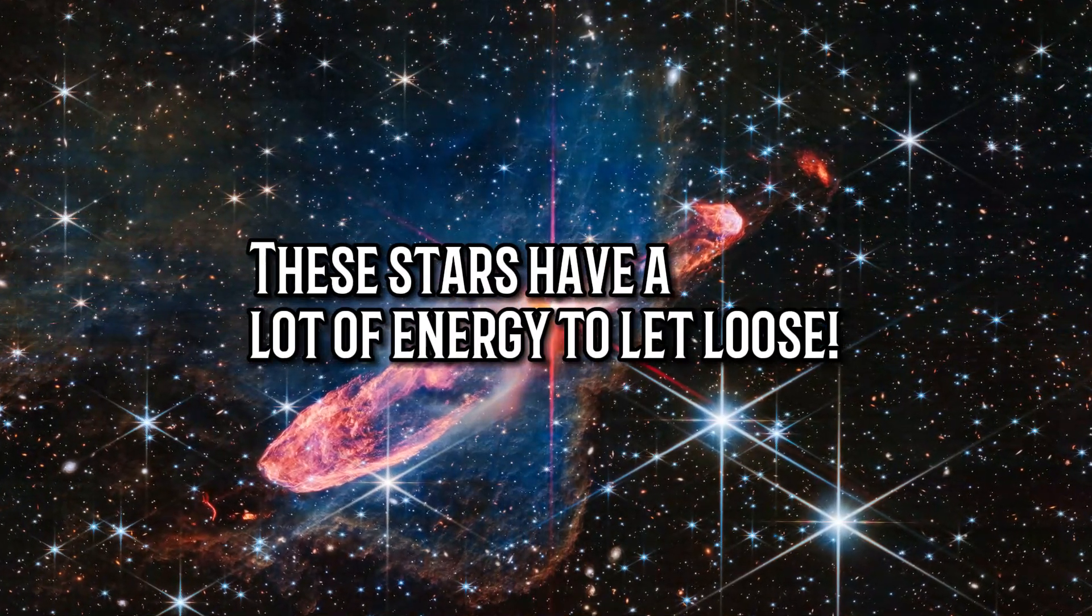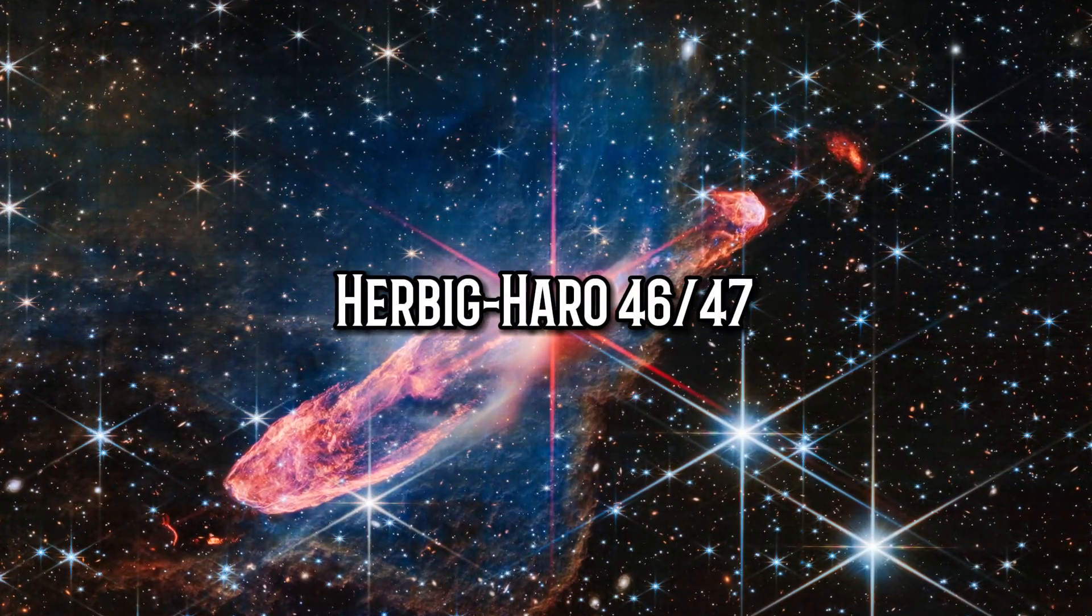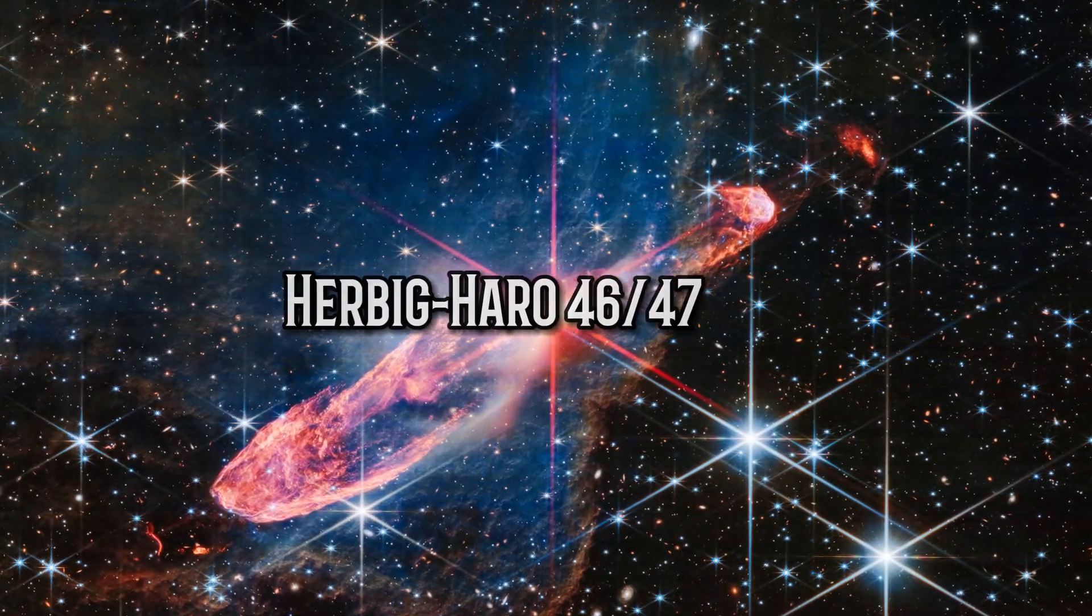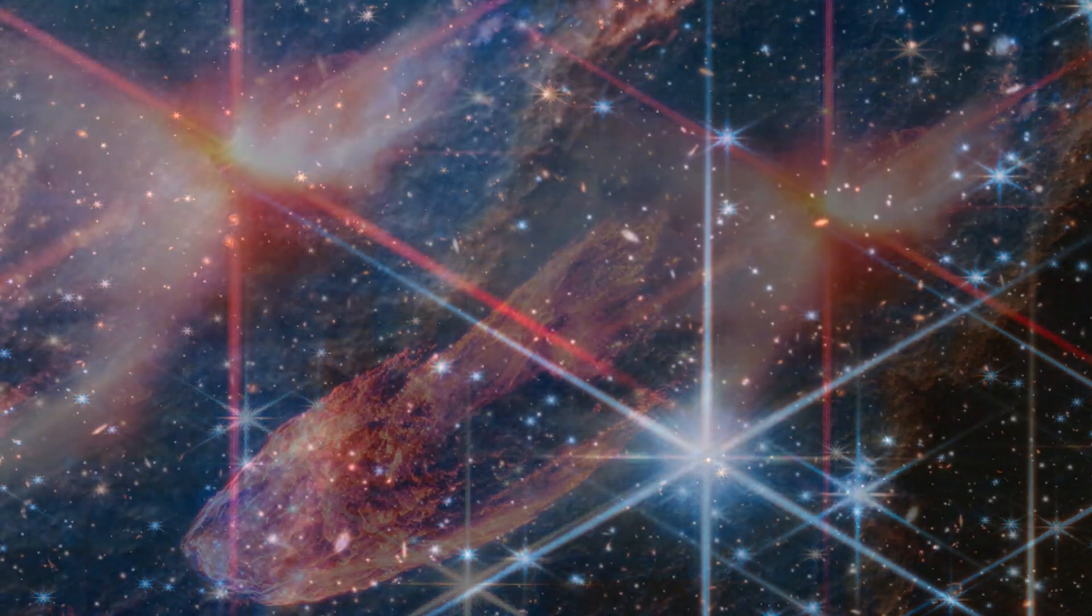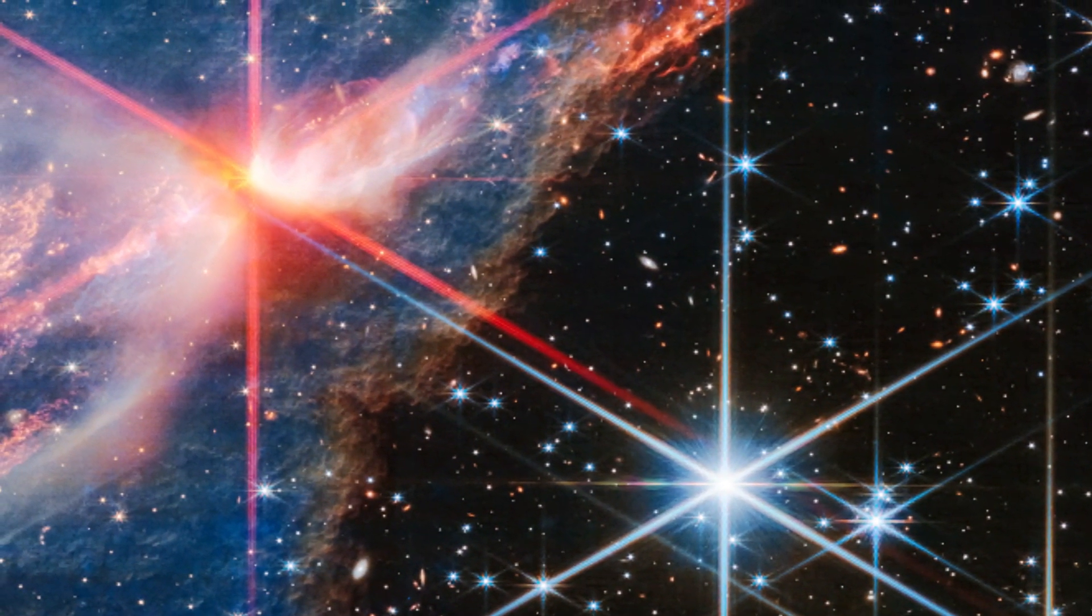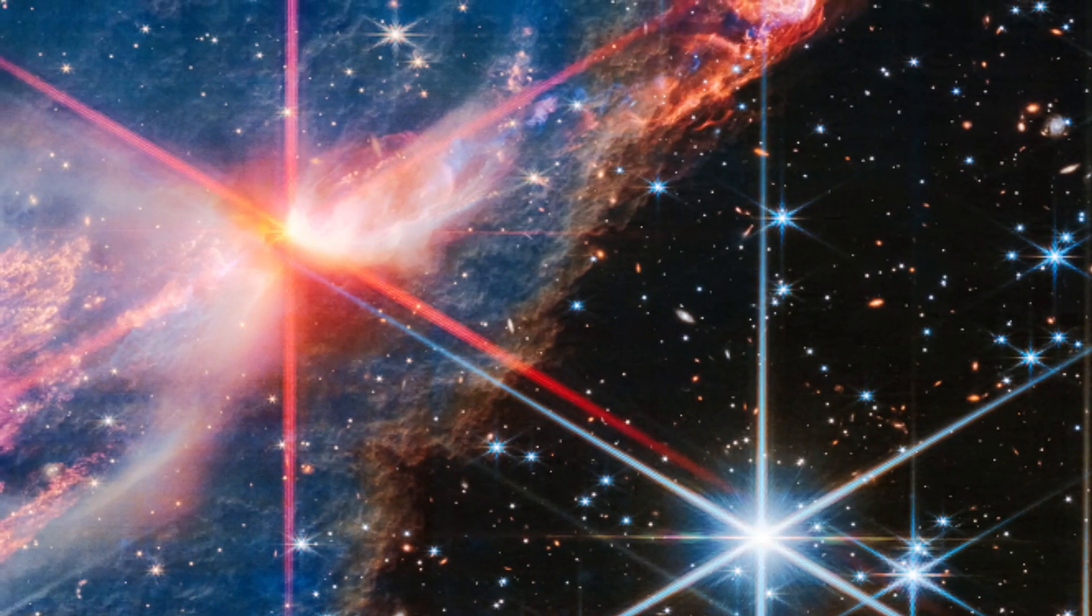James Webb Space Telescope has captured an incredible image of Herbig Haro 4647, a pair of actively forming stars. This image provides a unique glimpse into the early stages of star formation. Herbig Haro 4647 is only a few thousand years old, making it a relatively young star system.